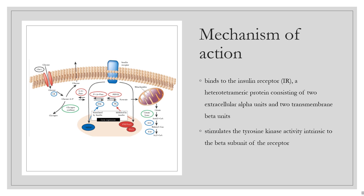Insulin binds to the insulin receptor (IR), a heterotetrameric protein consisting of two extracellular alpha units and two transmembrane beta units. The binding of insulin to the alpha subunit of IR stimulates the tyrosinase activity intrinsic to the beta subunit of the receptor. The bound receptor is able to autophosphorylate and phosphorylate numerous intracellular substrates such as insulin receptor substrates (IRS) proteins, CBL, APS, SHC, and GAB1. These activated proteins, in turn, lead to the activation of downstream signaling molecules, including PI3 kinase and AKT.